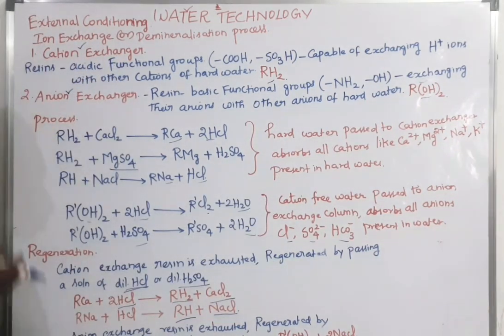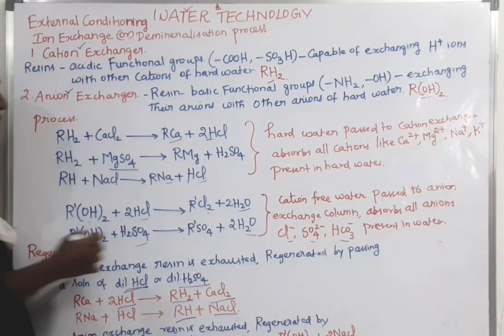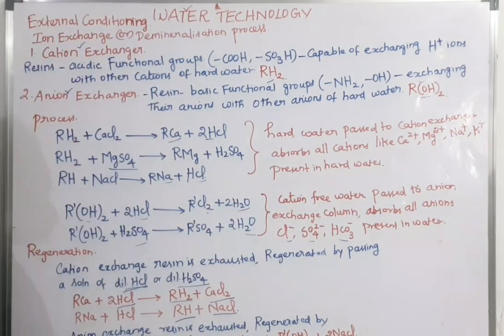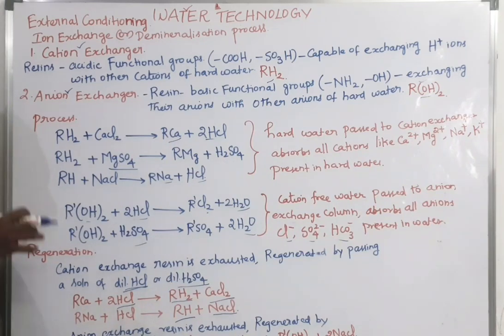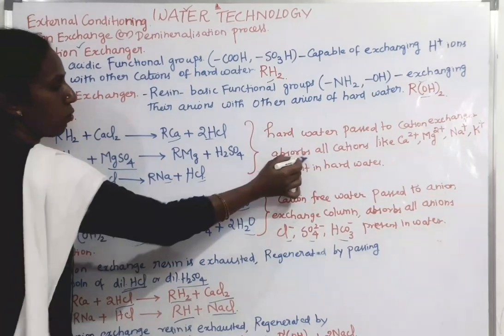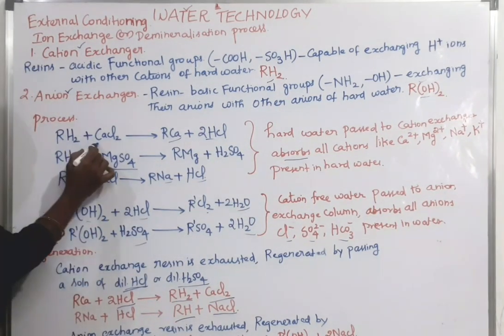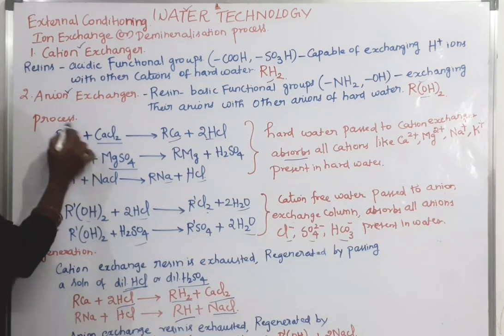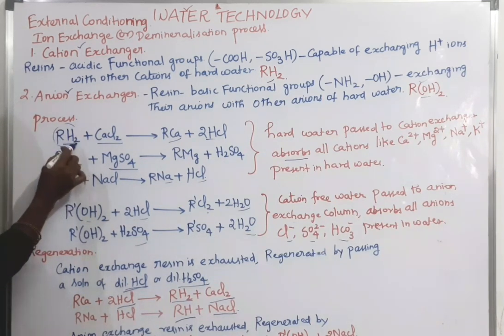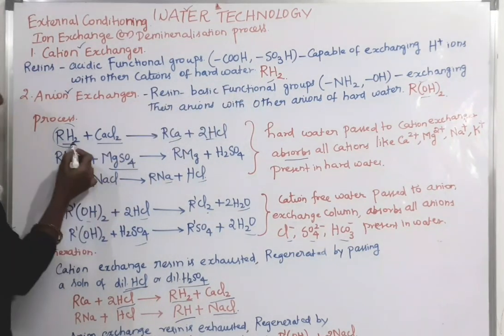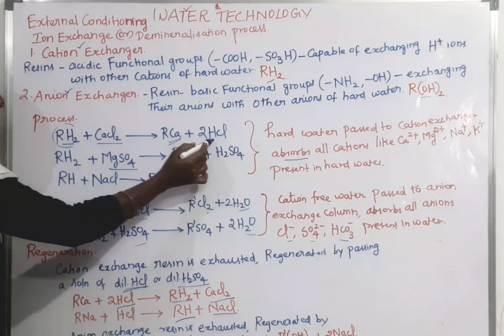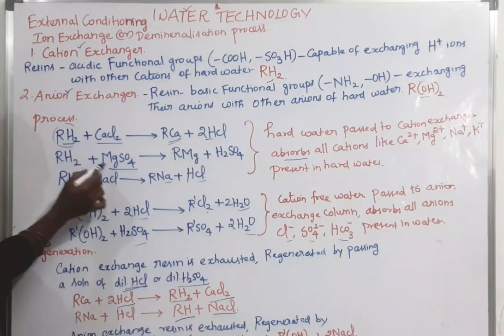Let us see the process. The hard water is first passed into the cation exchanger, which absorbs all the cations like calcium, magnesium, sodium, and potassium present in the hard water. The reaction is: calcium chloride plus RH2 gives R·Ca plus 2HCl. This is the general representation of the cation exchanger RH2, which absorbs all the cations.